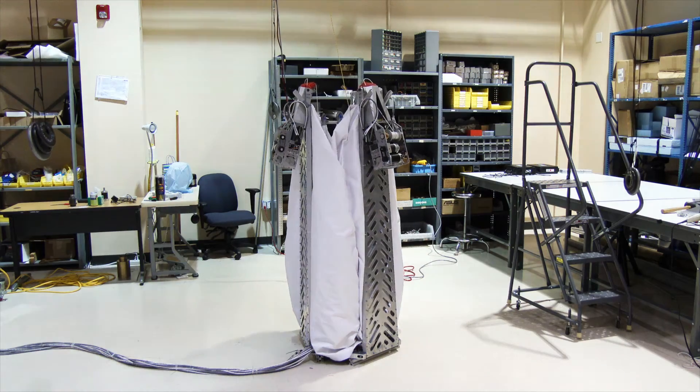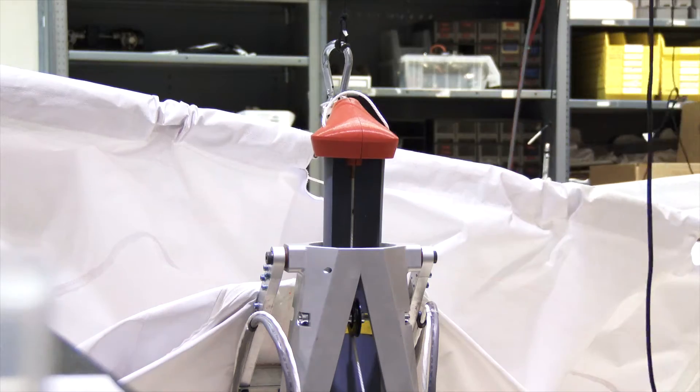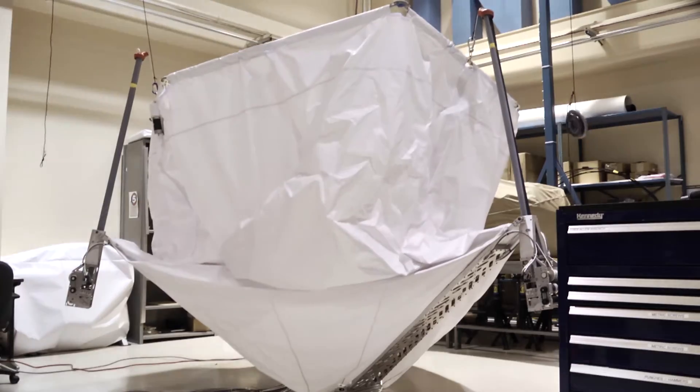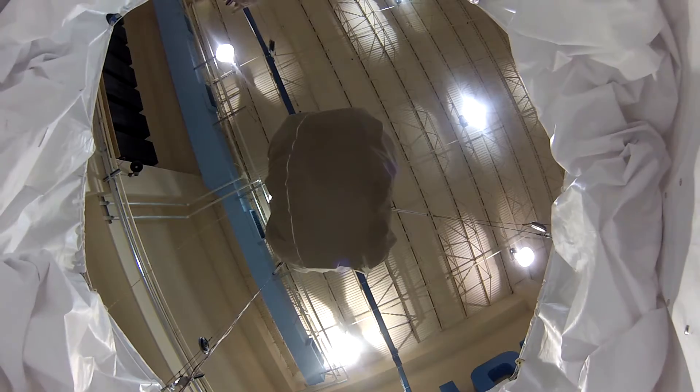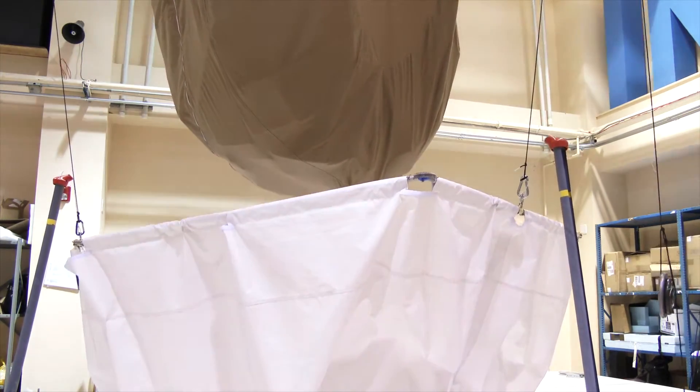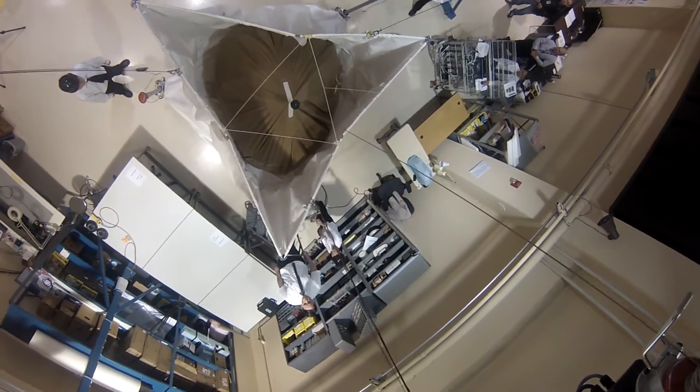The concept is basically this robotic mechanism that deploys three identical arms. The arms extend—on the flight design it'll be nearly 30 feet—to deploy a bag. Basically, the whole mechanism's function is to extend and expand this bag out in space that will capture a school bus-sized asteroid.